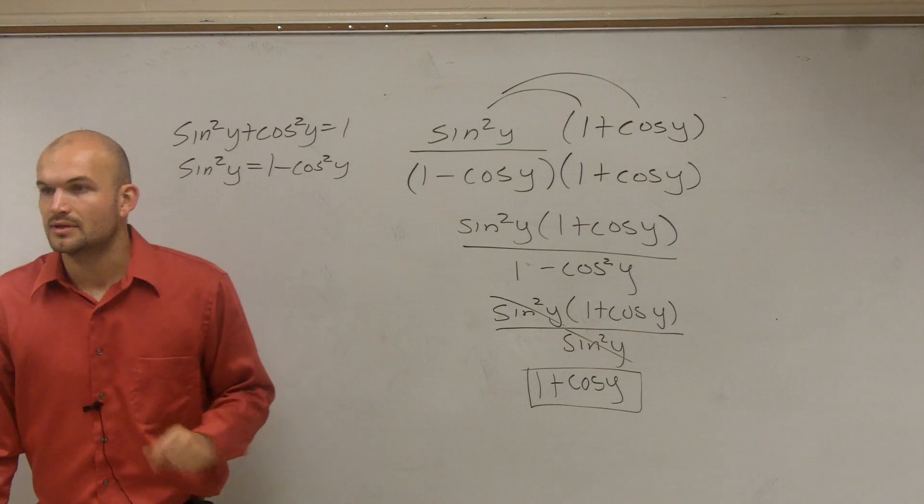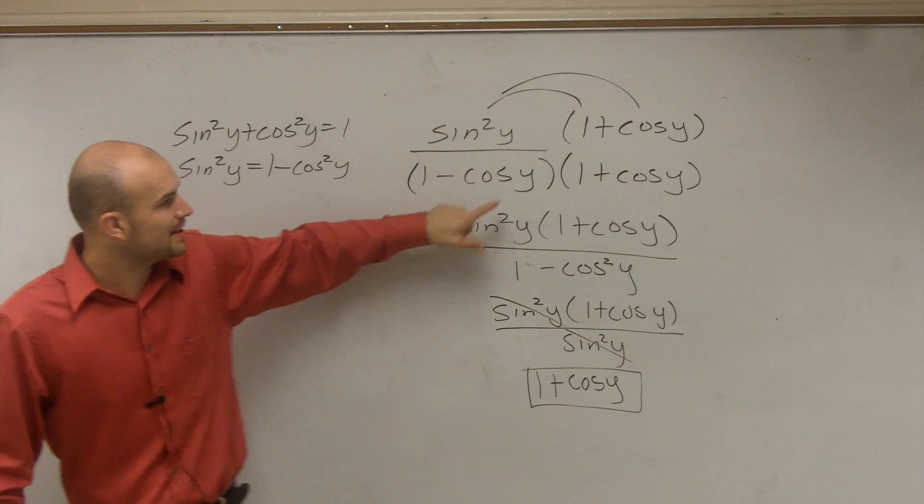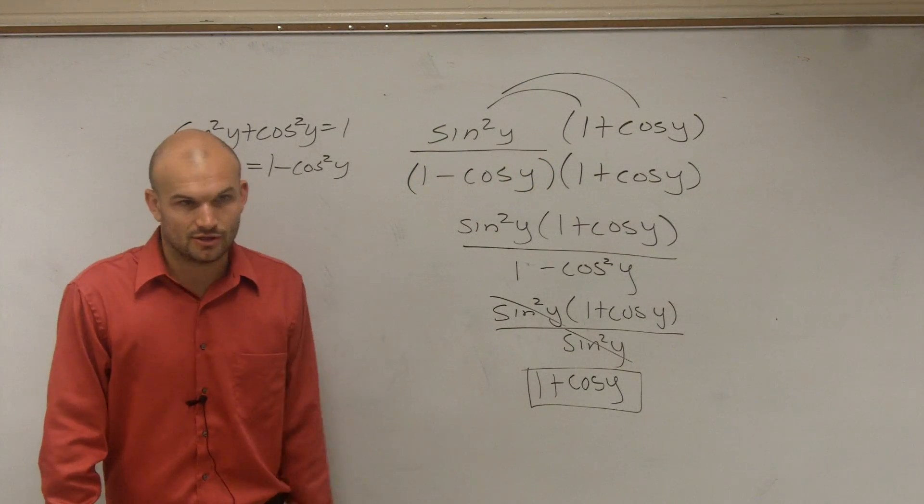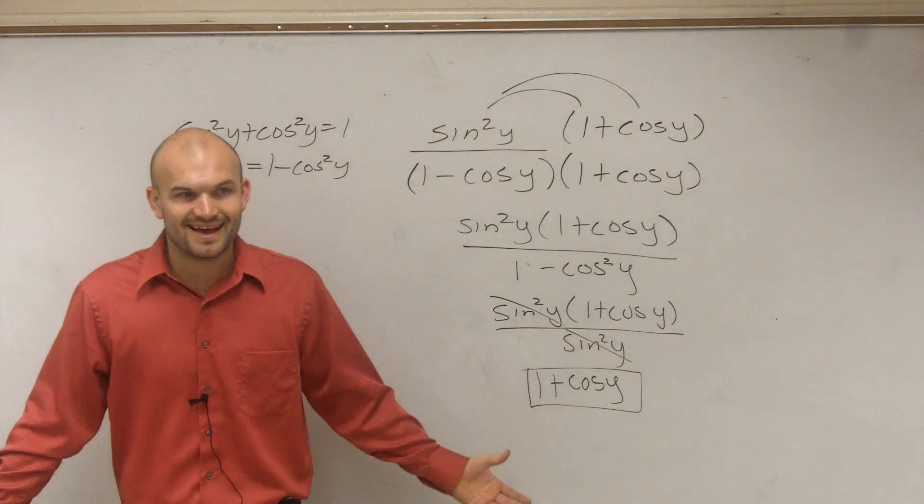Does that make sense? So when you have something in your denominator, multiply by your conjugate and you can get it off. Would you guys like to know a little quicker, easier way? Yeah! Alright.